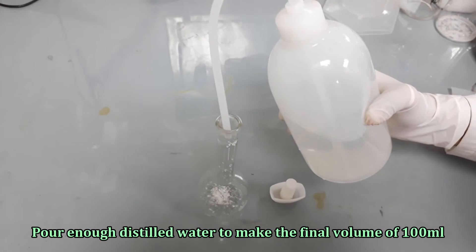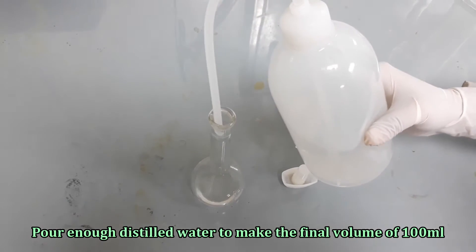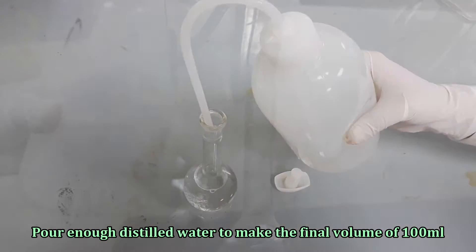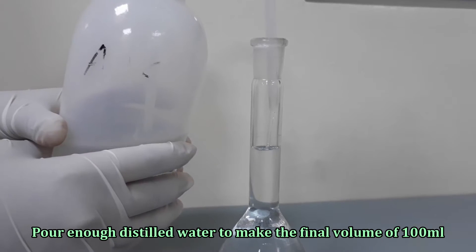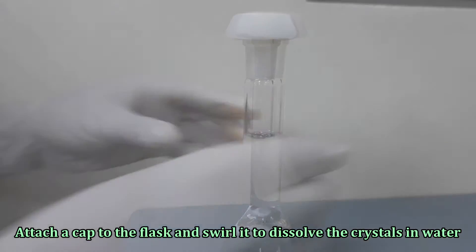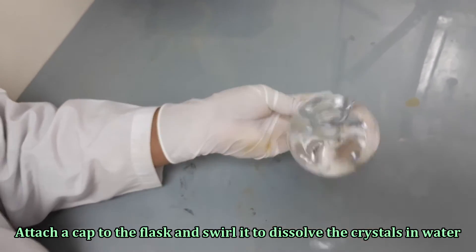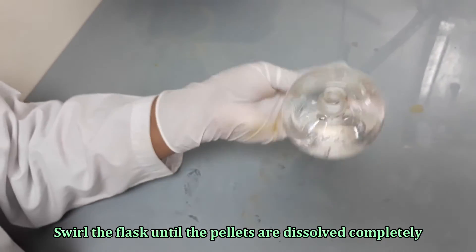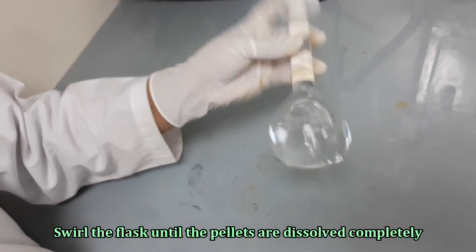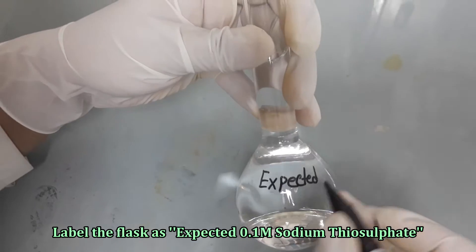Fill the flask with distilled water up to the mark. Swirl the flask to mix the solution. Label the flask as expected 0.1 molar sodium thiosulfate.